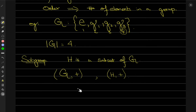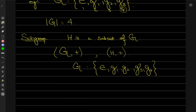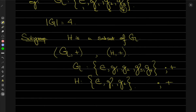For example, suppose G is a group with elements {E, G1, G2, G3, G4}, and H is a set with elements {E, G1, G2}. If both are under the same operation — addition — then H is a subgroup of G, because H contains some of the elements of G and is itself a group under the same operation.